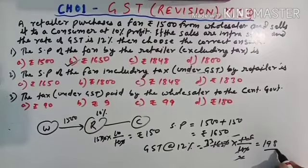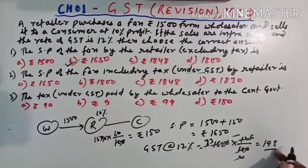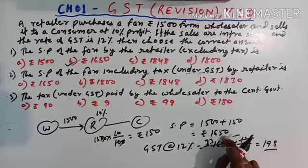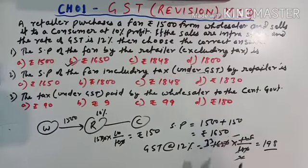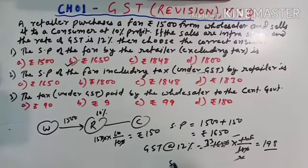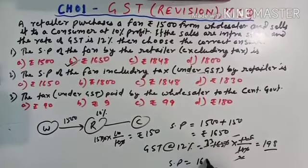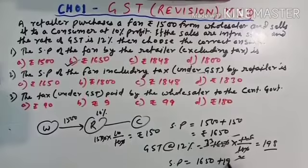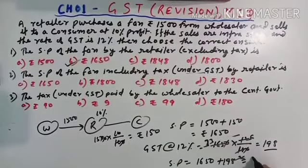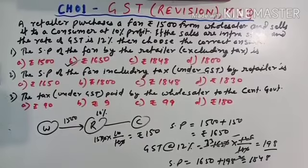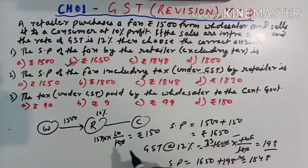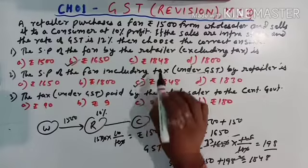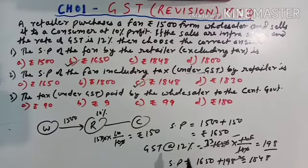This is the GST, now you add here, you will get the total amount, so SP would be 1650 plus 198 equals Rs. 1848. So your answer is C number, understood. So like that, we will solve the third one now.